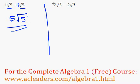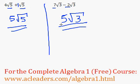What about over here? 7 root 3 minus 2 root 3. Because we have root 3 for both of them, we can combine the numbers. So 7 minus 2 is just 5. The answer is 5 root 3, which is the same thing as 5 times root 3.